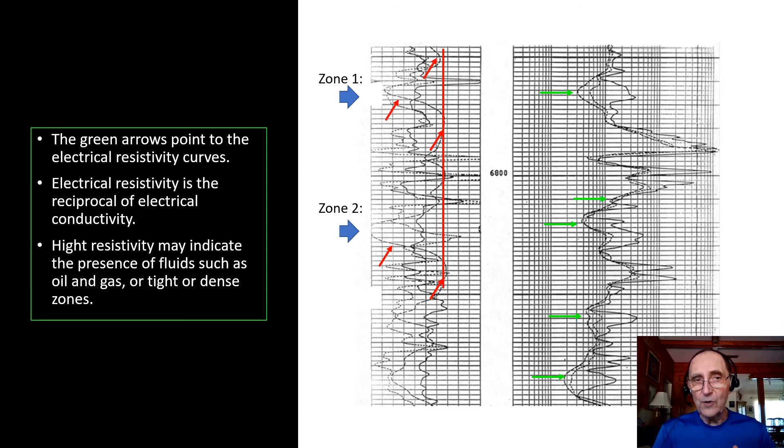The green arrows shown on the log point to the electrical resistivity curves. Electrical resistivity is the reciprocal of the electrical conductivity. High resistivity may be indicative of the presence of fluids such as oil and gas, or they could indicate tight or dense formations.